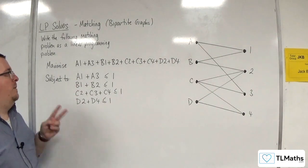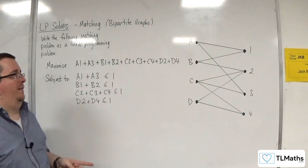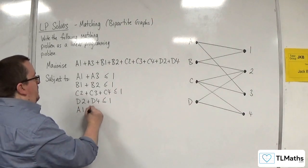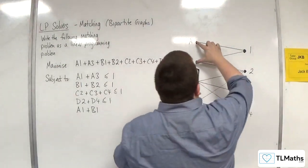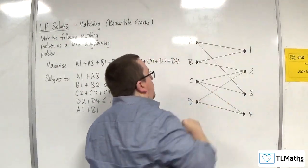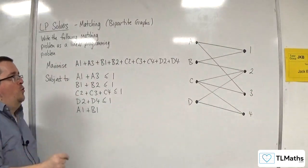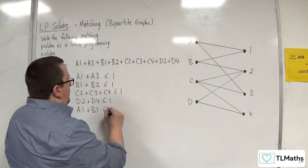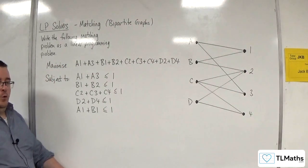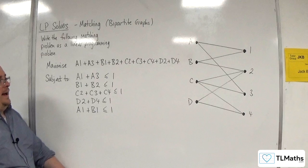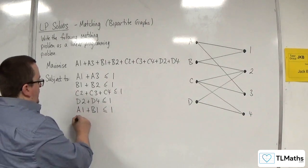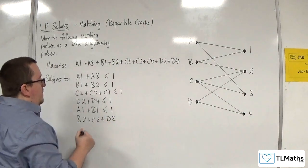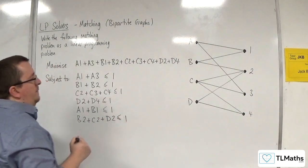So I must have a constraint on each of the jobs as well. So I need A1 plus B1, so the two workers who can do job 1, I only want one of them to be picked, so at most. So that's got to be less than or equal to 1. And for job 2, we've got B2 plus C2 plus D2. Three people who can do it, but I only want one of them at the most.